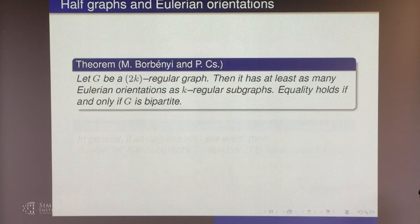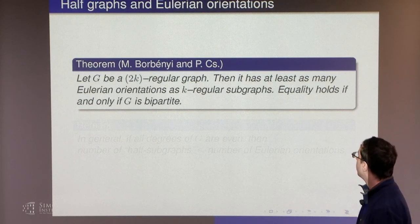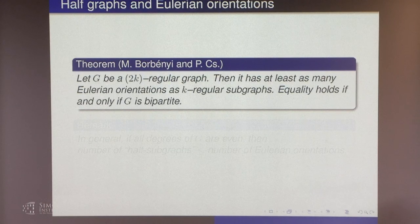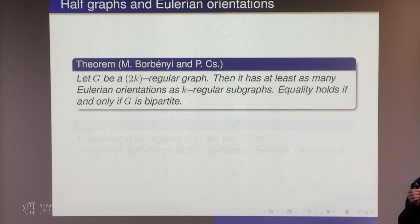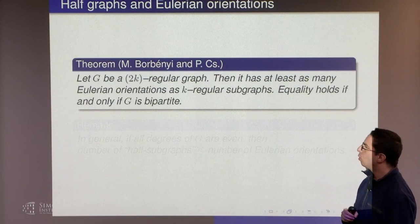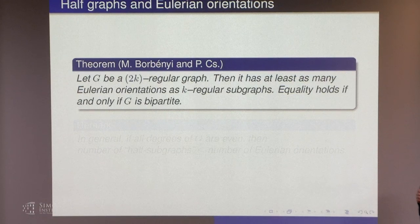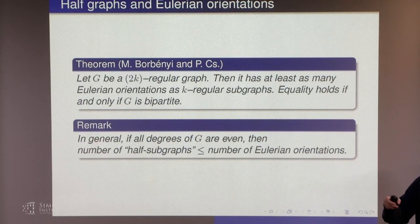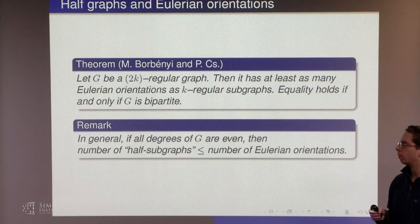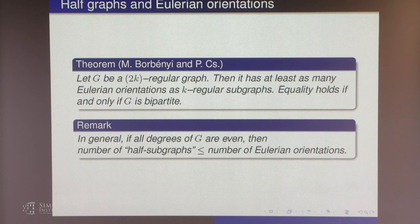Let me show a very similar result. Consider a 2k-regular graph G and count both the number of Eulerian orientations and the number of k-regular subgraphs — that is, subsets H of edges where the degree of each vertex is exactly k. The claim is that we always have at least as many Eulerian orientations as k-regular subgraphs.